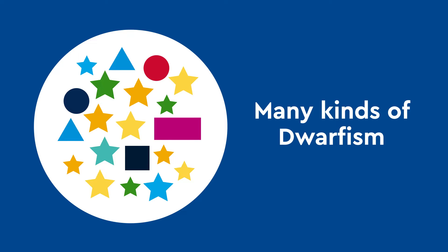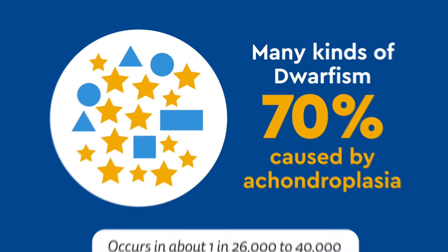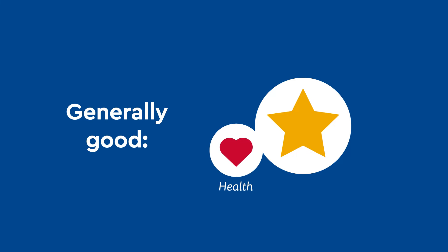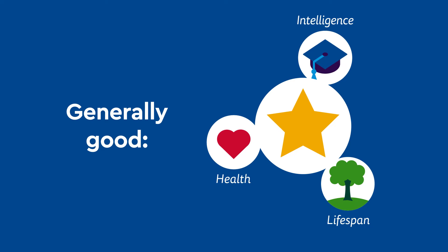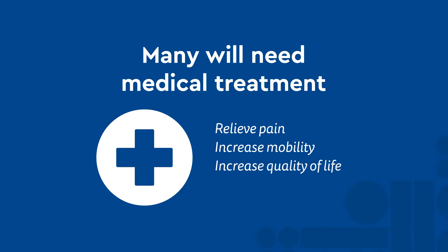There are many kinds of dwarfism caused by many different conditions; however, 70% of cases are caused by achondroplasia, which occurs in about one of every 26,000 to 40,000 births. Generally, children with achondroplasia grow up to have good health, intelligence, and lifespans. However, many will need medical treatment to relieve pain, increase mobility, increase their quality of life, and address other medical concerns.